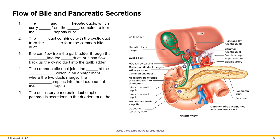Please remember to fill in the blanks as you watch the lecture. We're looking at an anterior view of the liver, gallbladder, pancreas, and the duodenum. Starting with two tubes that exit the liver: the right hepatic duct comes from the right lobe and the left hepatic duct comes from the left lobe. They merge to form a short segment called the common hepatic duct.